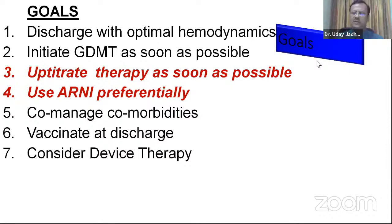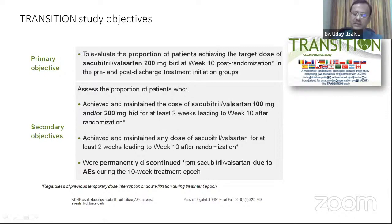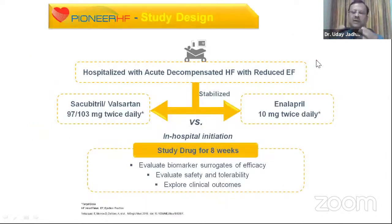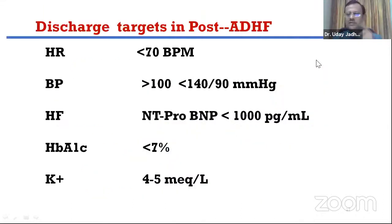At discharge, give an influenza vaccine and a pneumococcal vaccine. ARNI initiation during hospitalization was studied in PIONEER-HF. Ensure these patients are not on loop diuretic infusions or inotropes, and that BP is reasonably stable before initiating ARNI. Start at a lower dose, go slow, and aim for 200 mg twice daily. Dr. Mohan's discharge targets: HR less than 70, systolic BP 100–140, NT-proBNP less than 1000, HbA1c around 7%, potassium 4.2–4.5.